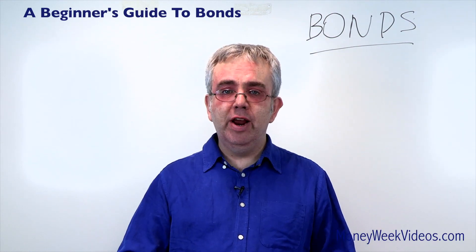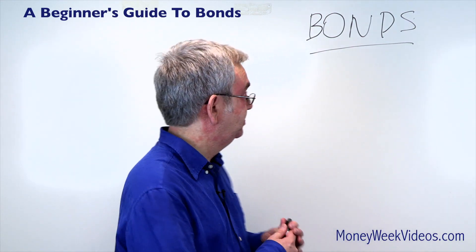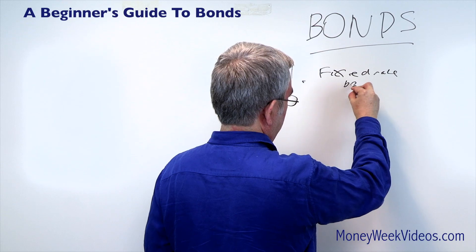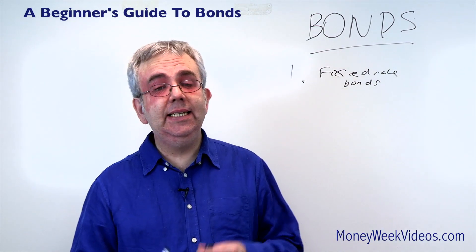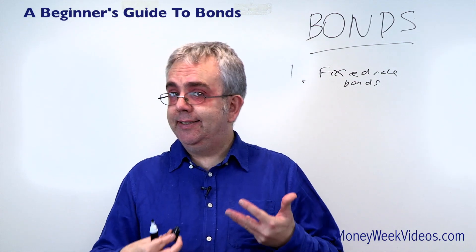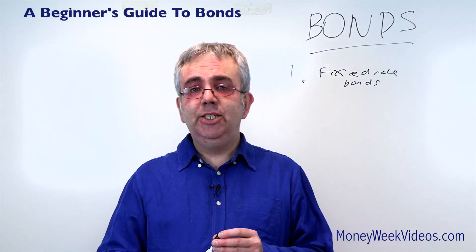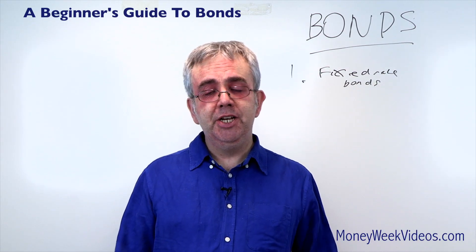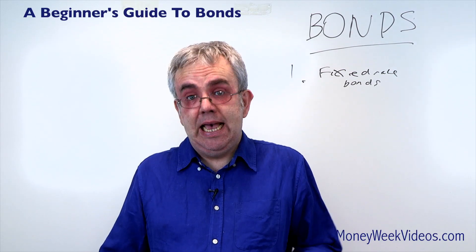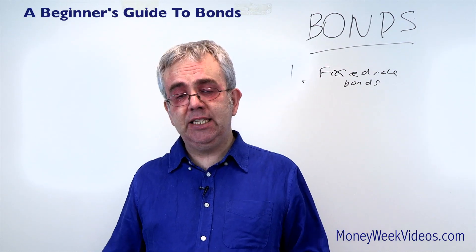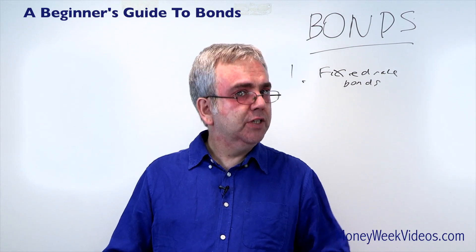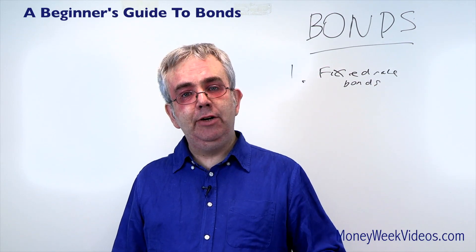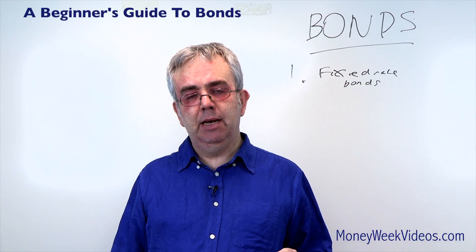So I'm going to start with fixed rate bonds or cash bonds. These are basically savings accounts and the only difference from an instant access savings account is you're tying your money up for a set period of time — maybe two, three, five years — and over that period you'll get a guaranteed fixed interest rate, so it could be say three percent a year for the next five years. Fixed rate bonds are very safe; you won't lose your money, or almost certainly won't, and you've got that guaranteed rate so you'll be able to plan ahead knowing how much money is coming in.